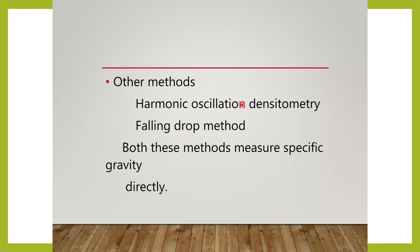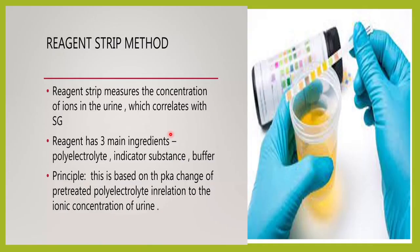There are other methods also to measure urine specific gravity, like oscillation densitometry or the falling drop method. The most commonly used method today is the reagent strip method. On a urine dipstick there will be an area for specific gravity which will tell you the concentration of ions in the urine. The basic principle is the same — all measure the concentration of ions, kitnay usmeh solutes hai. To measure this, three things are required: a polyelectrolyte, an indicator substance, and a buffer.